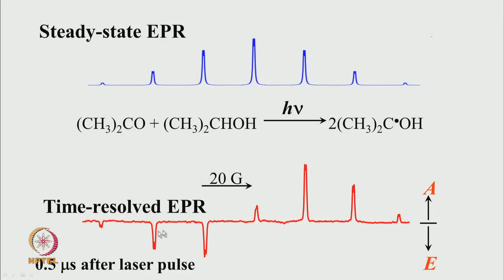This spectrum shows that some levels are getting selectively populated — some levels of the Zeeman-split lines. Each transition involves a pair of Zeeman levels depending on the nuclear spin state. Some are populated more than others and sometimes it is the other way around.